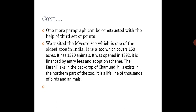I shall construct one more paragraph with the next set of points. Topic sentence: 'We visited the Mysore Zoo, which is one of the oldest zoos in India.' It covers 150 acres and has 1,320 animals. It was opened in 1892 and is financed by entry fees and an adoption scheme. The Karanji Lake in the backdrop of Chamundi Hills exists in the northern part of the zoo and is the lifeline of thousands of birds and animals. This paragraph was constructed with the headings converted into declarative sentences.